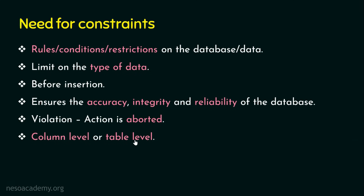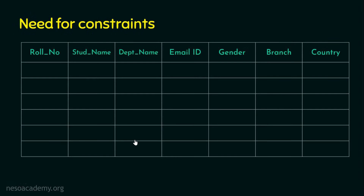Now we understand what is the need for having constraints and how these constraints can be executed in SQL. Let's see an example and what are all the various constraints that we can enforce. We are looking at an example table that contains seven columns: role number, student name, department name, email ID, gender, branch, and country.